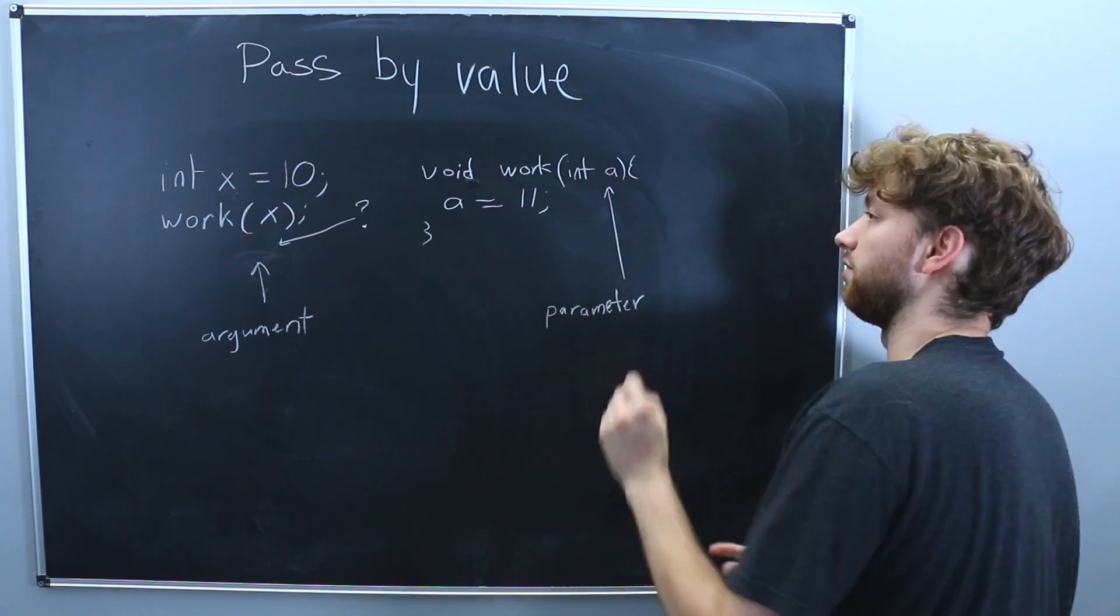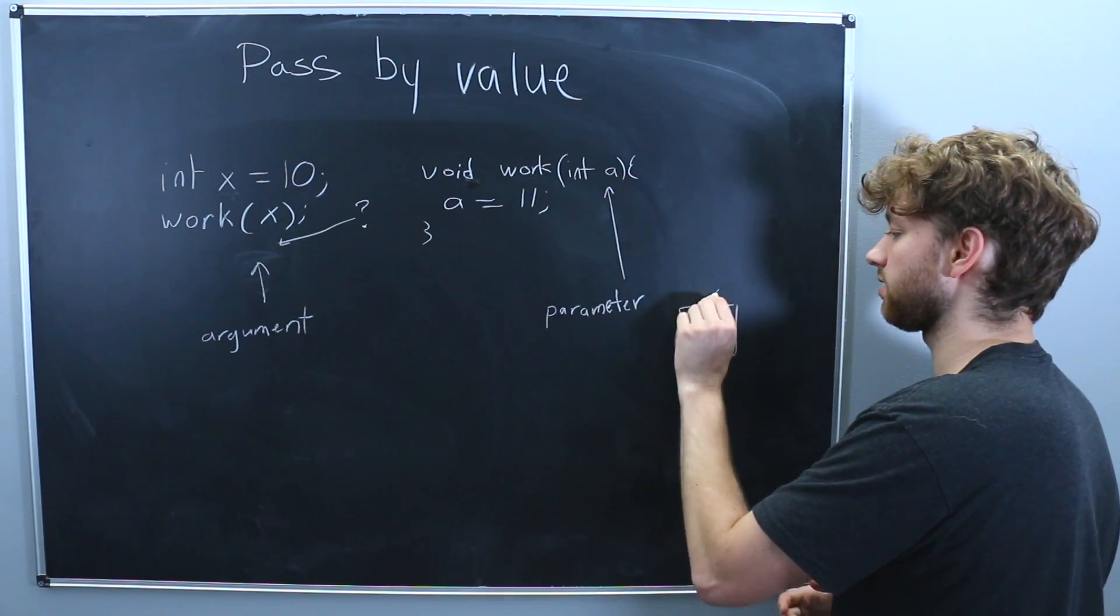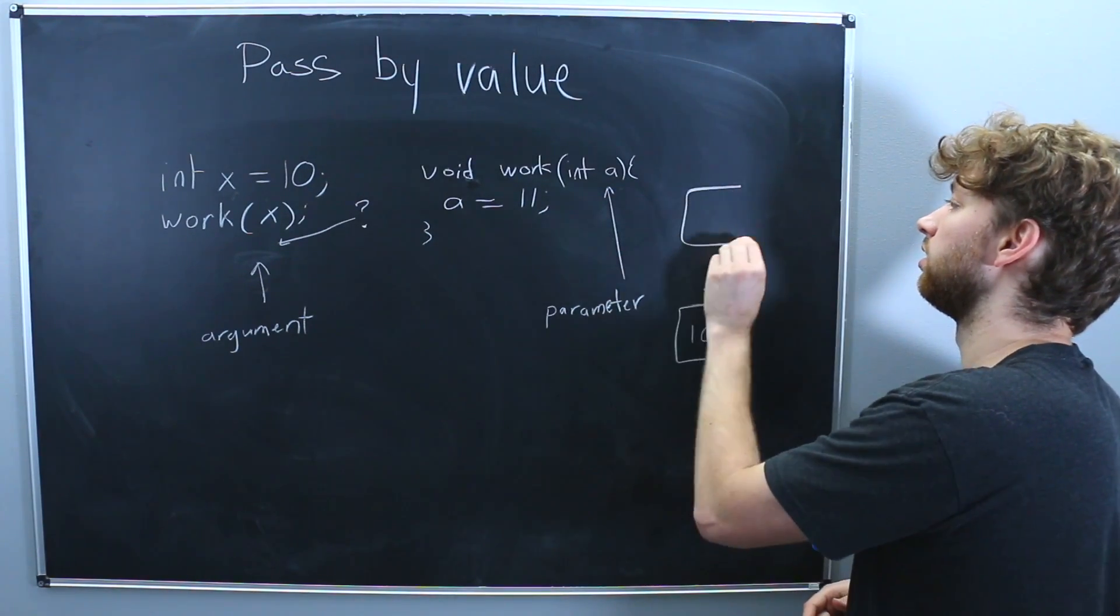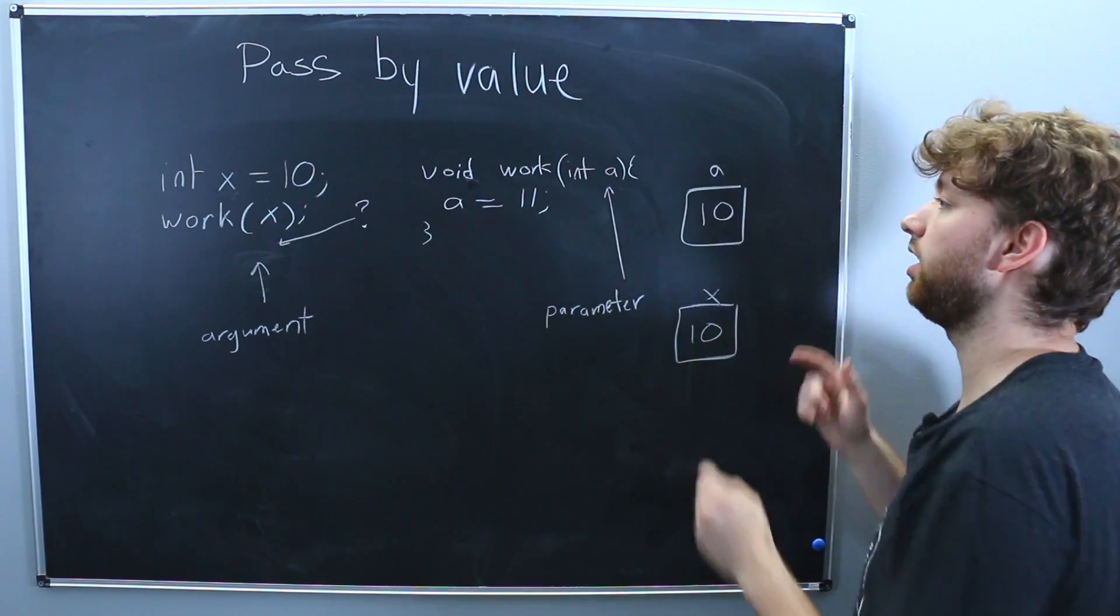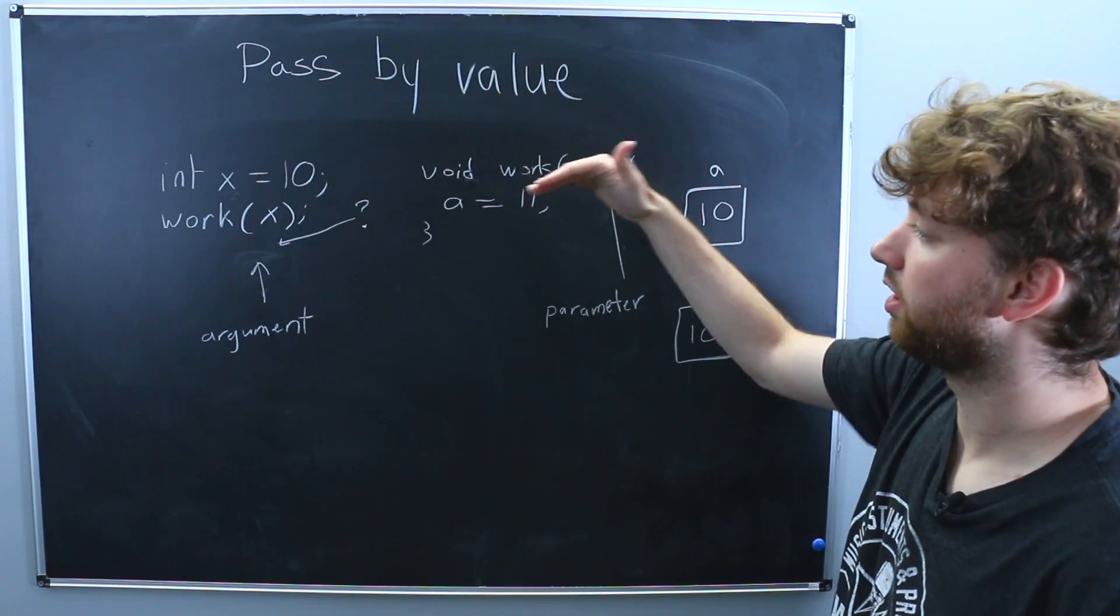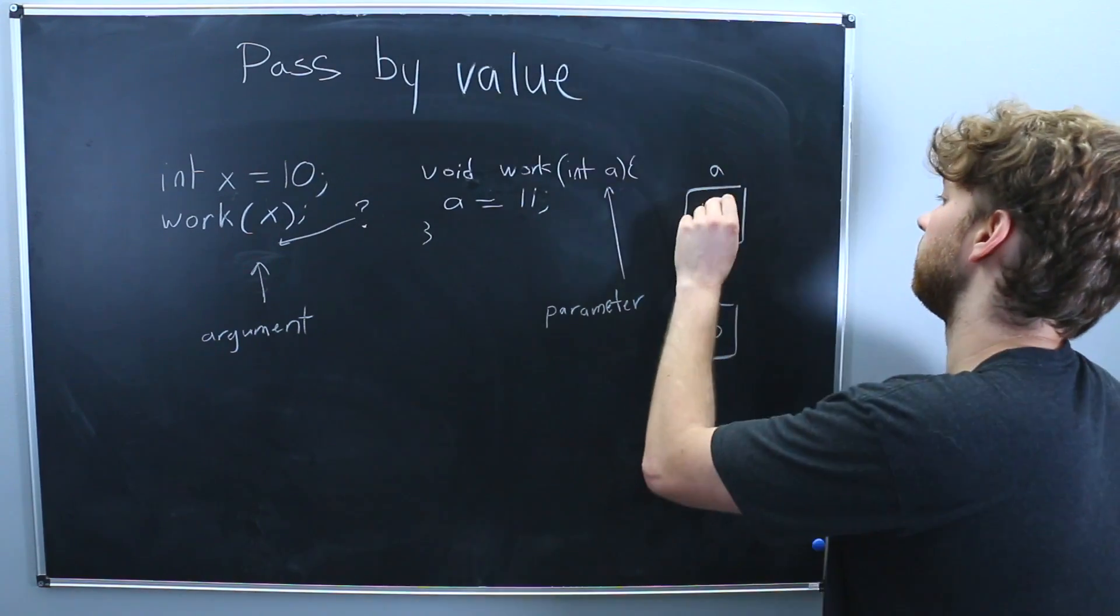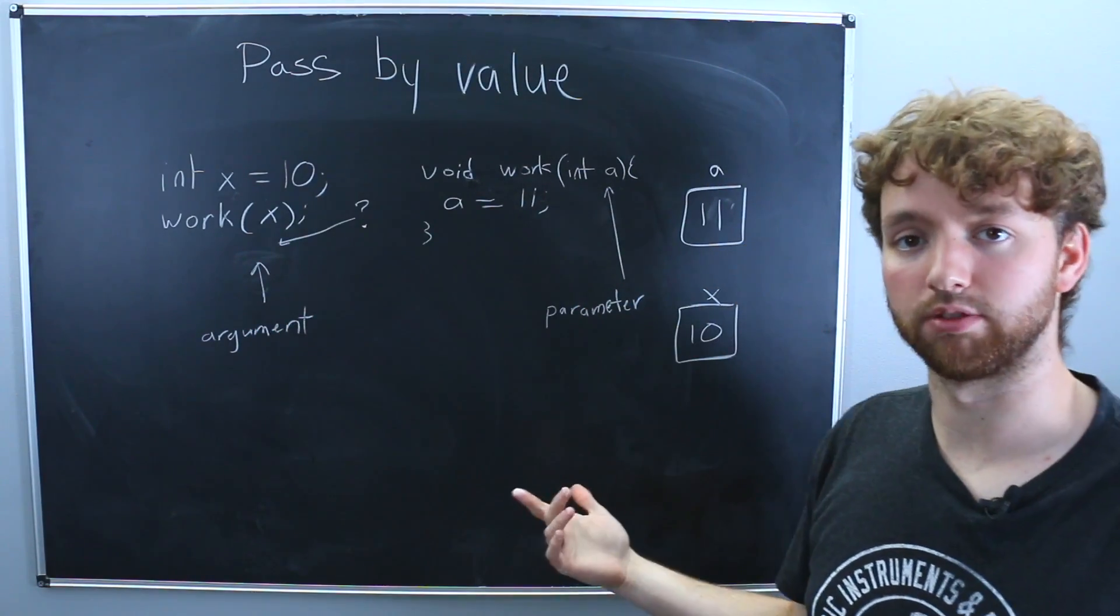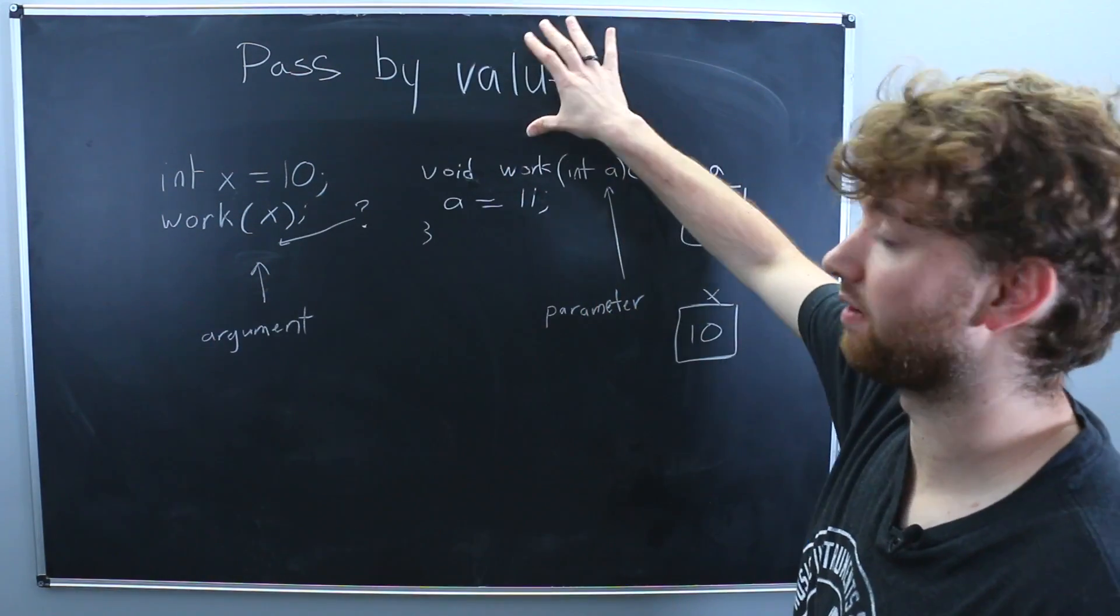So when we are passing by value, which is how this is right now, by default, here's how it's going to work. We're going to have this variable called x, and we assigned it the value 10. Then we define another variable, this parameter here, and it's called a. And that value 10 is copied in to the parameter a when we invoke the function and pass it in. Then we start at the top of the function, going line by line, and you can see a is replaced to 11. The function ends, and we start our code down here now. And you can see x still has the value 10, so none of the changes inside of this function are seen after the function call.